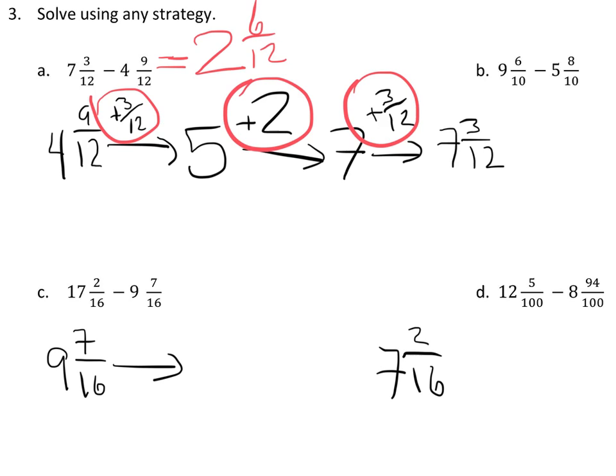So my first step is going to be to get to sixteen-sixteenths. So that would be to add nine more sixteenths, which would get me to ten. And then I want to get to seventeen, not seven, so I'm going to go up seven more. And that gets me to seventeen.